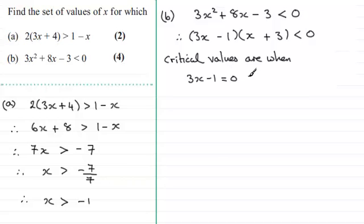So 3x minus 1 would equal 0, or the other factor, x plus 3 would equal 0. And in the usual way, if I add 1 to both sides, 3x would equal 1 here and then divide by 3, we end up with x equals 1 third. Or on this equation, if I take 3 from both sides, x would equal minus 3.